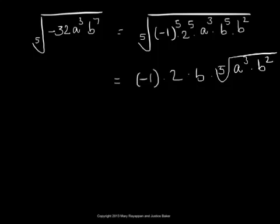Remember, factors that have powers lower than 5 should stay inside. This can also be written as negative 2b times fifth root of a cubed b squared.